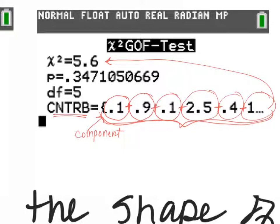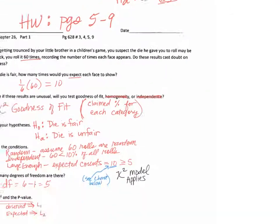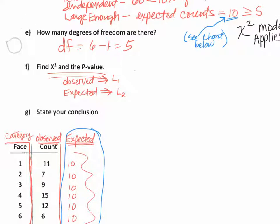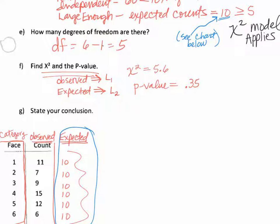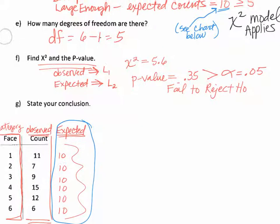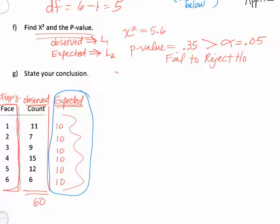Let's fill in our results. The chi-squared value was 5.6 and the p-value, rounding to two decimal places, is 0.35. When running a hypothesis test, what do we do with that p-value? Fail to reject. I compare it to alpha, and since 0.35 is greater than 0.05, I fail to reject H₀.